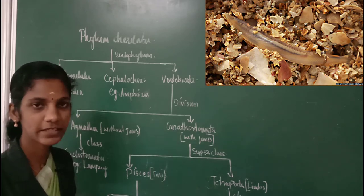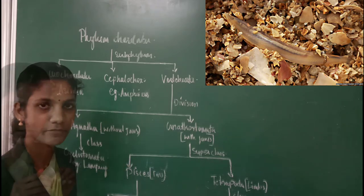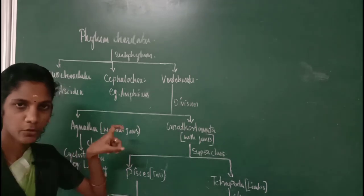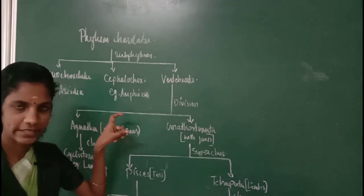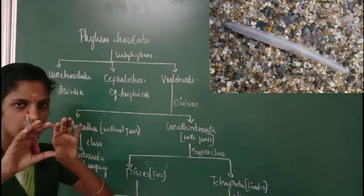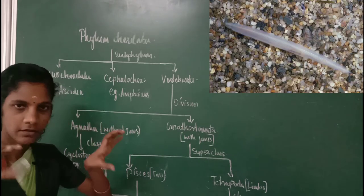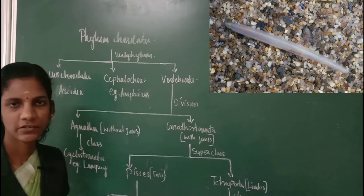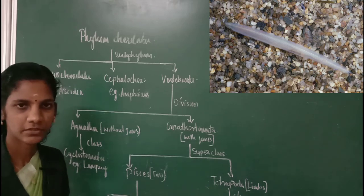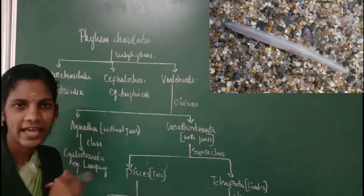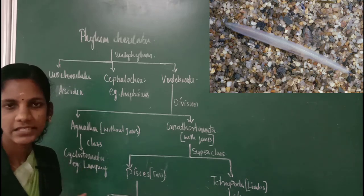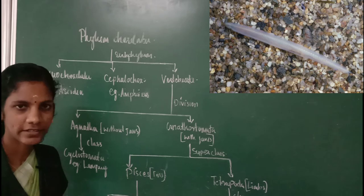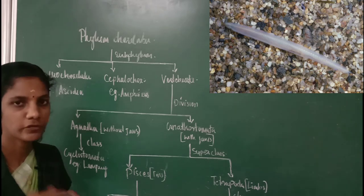Amphioxus has an elongated body with tapering ends. These are animals which can be seen in shallow coastal waters in a burrowing form.